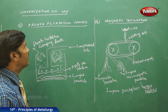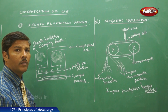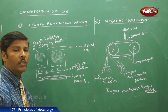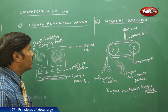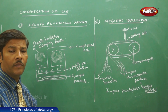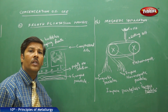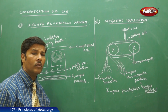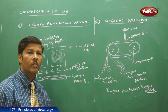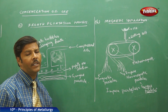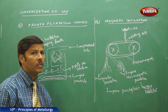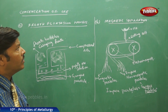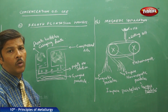Here we go for the next part of the discussion, that is the concentration of the ore. In the concentration of ore we have four methods, as already discussed in the flow chart: crushing of ore, hand picking, froth flotation process, and magnetic separation. Among these four methods, froth flotation process and magnetic separation are the most important methods of ore concentration.